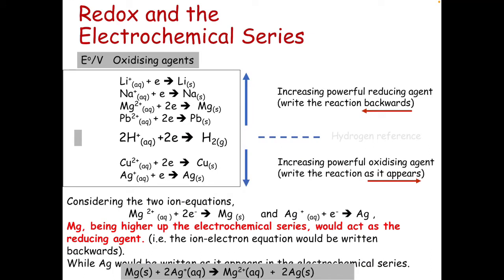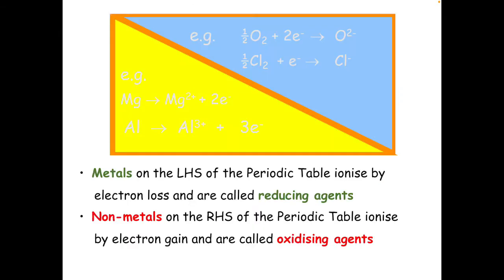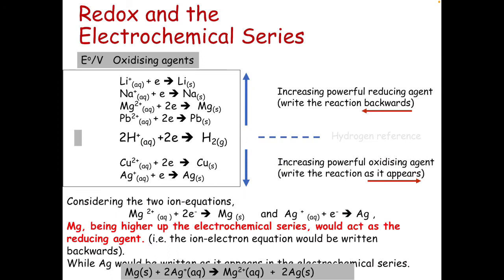This is redox and the electrochemical series. Non-metals are going to be really good oxidising agents and metals — specifically Group 1 — are going to be really good reducing agents. If you think back to National 5 and the electrochemical series, the metal that was higher up was the one where electrons would flow from, because that's the one doing the oxidation reaction. All the reactions in the electrochemical series are written as reduction reactions — they're gaining electrons.